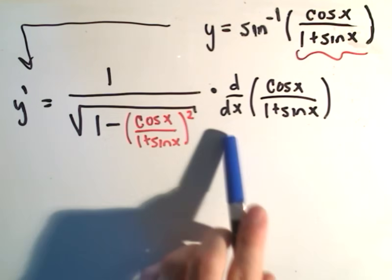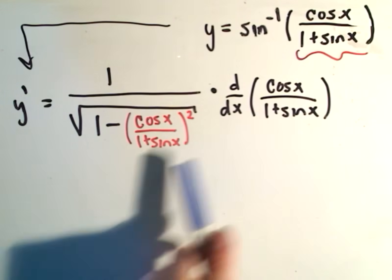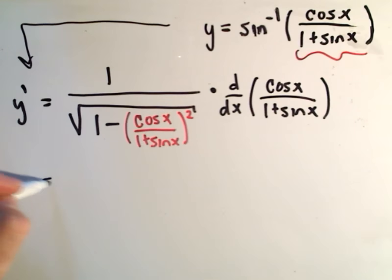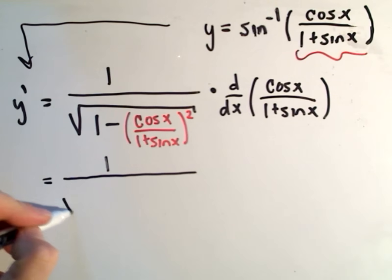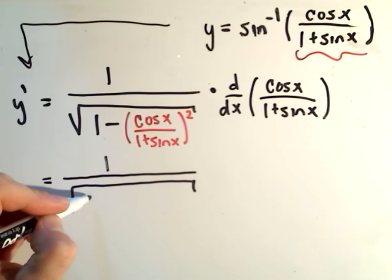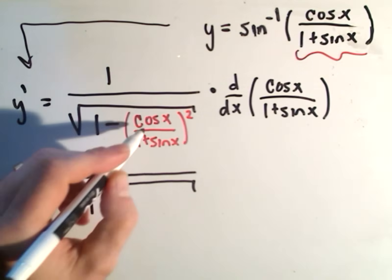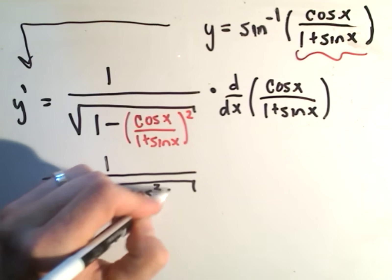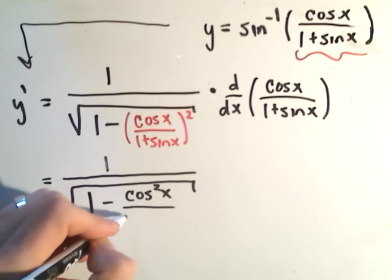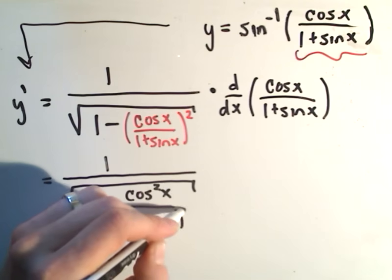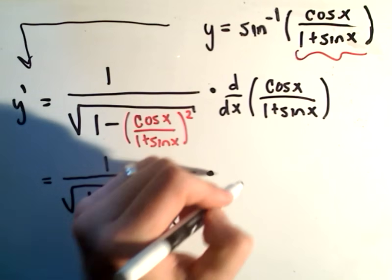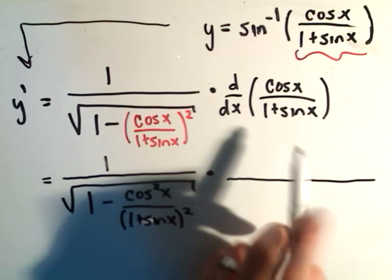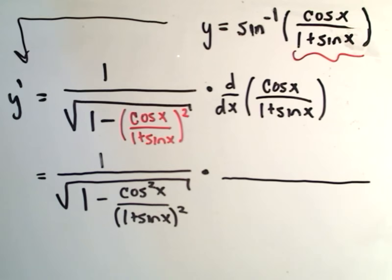This is where it just turns into big algebra and trig problems, which is the fun part of calculus. We still have to take the derivative of the inside part, and we'll have some algebra fun with the first part. I'm going to square the top and get cosine squared x. I'll leave the bottom part alone — one plus sine x quantity squared. And I still have to multiply this by the derivative of cosine x divided by one plus sine x.